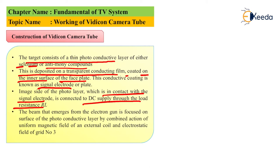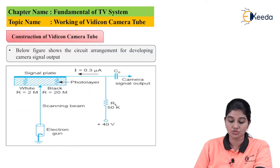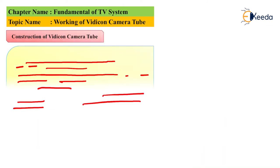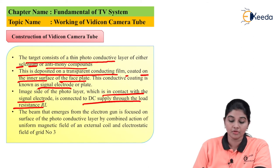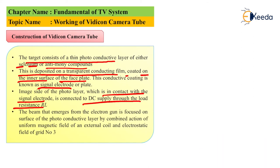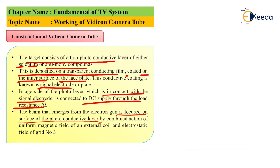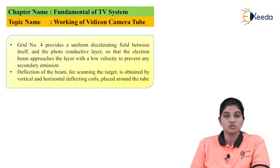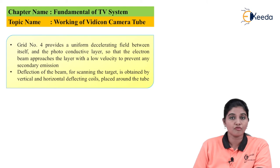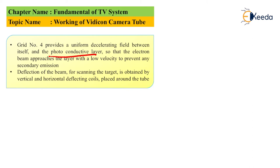Referring back to the circuit diagram, the load resistance RL of 50KΩ is connected between the power supply and the conducting plate. The beam that emerges from the electron gun is focused onto the surface of the photo conducting layer. By combining the action of a uniform magnetic field and an electrostatic field — the magnetic field created by the external coil and the electrostatic field created by grid number 3 — the electron beam is focused. Grid number 4 provides a uniform field between itself and the photo conducting layer so that the electron beam approaches the layer with very low velocity, which prevents any secondary emission.